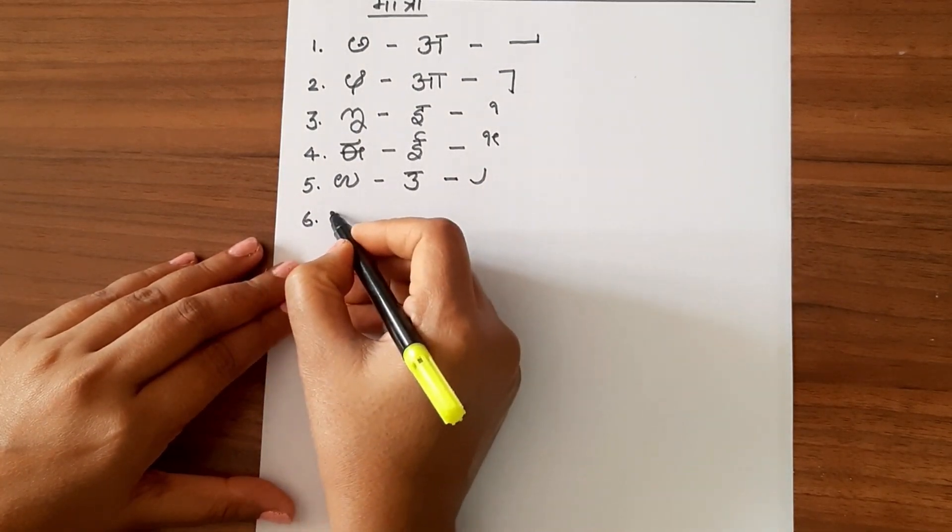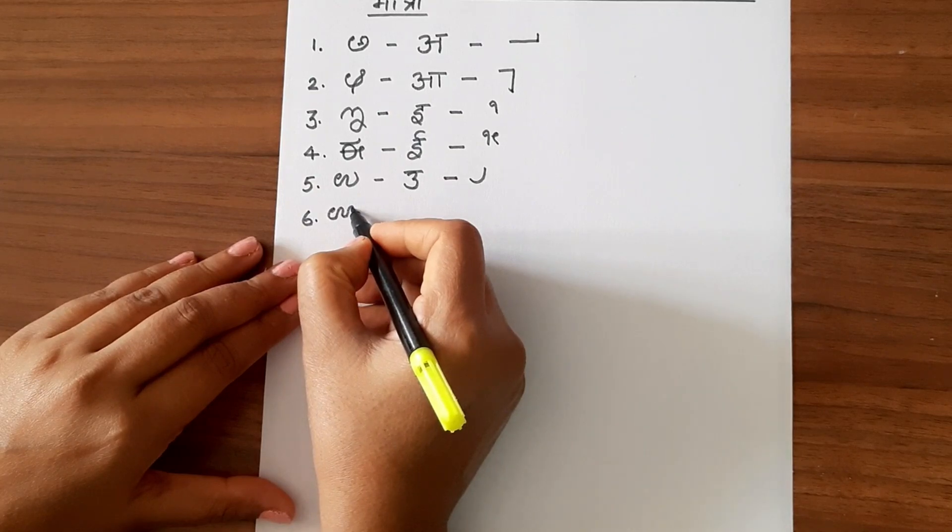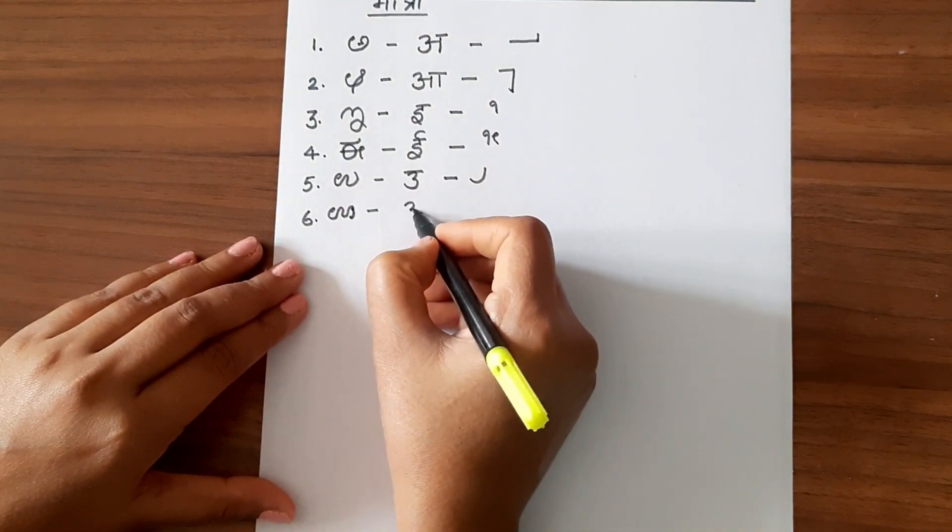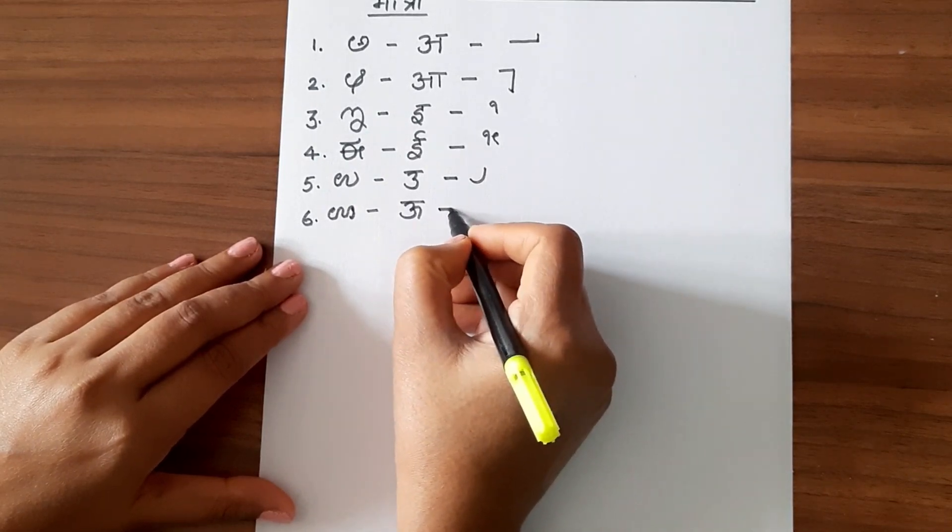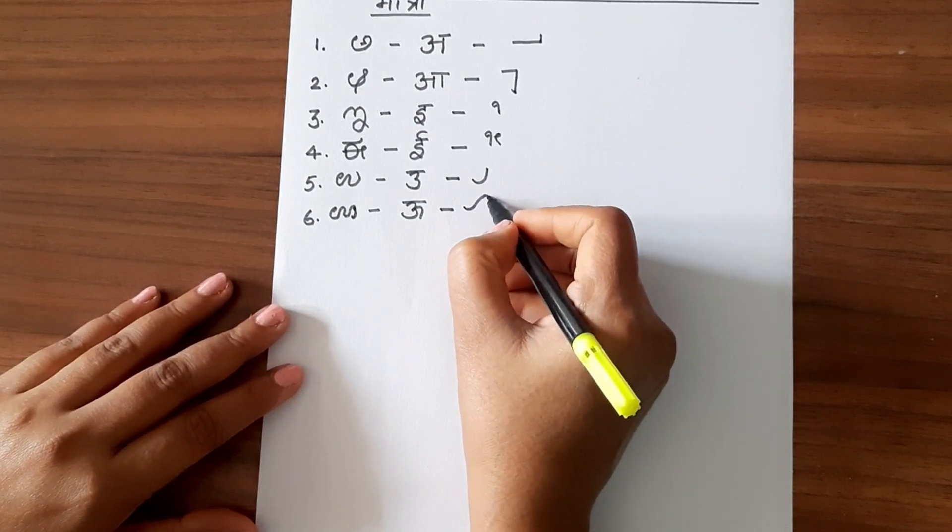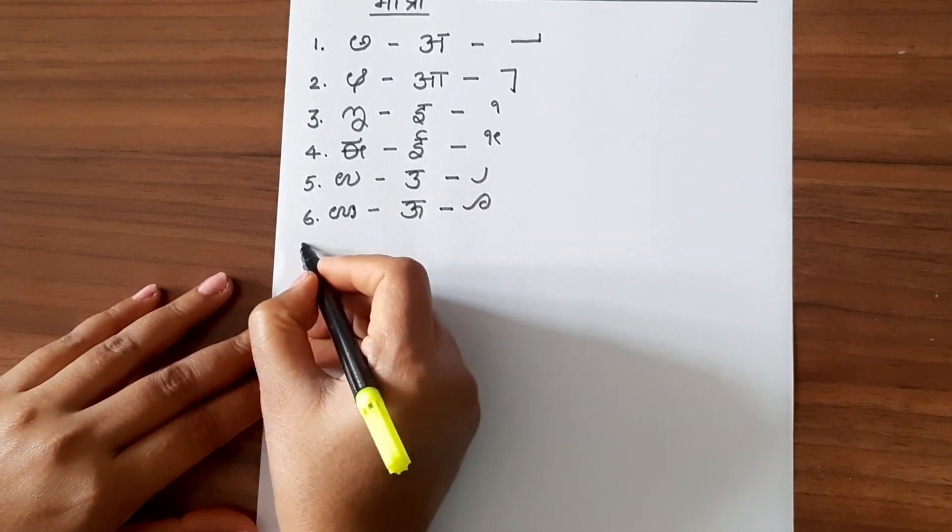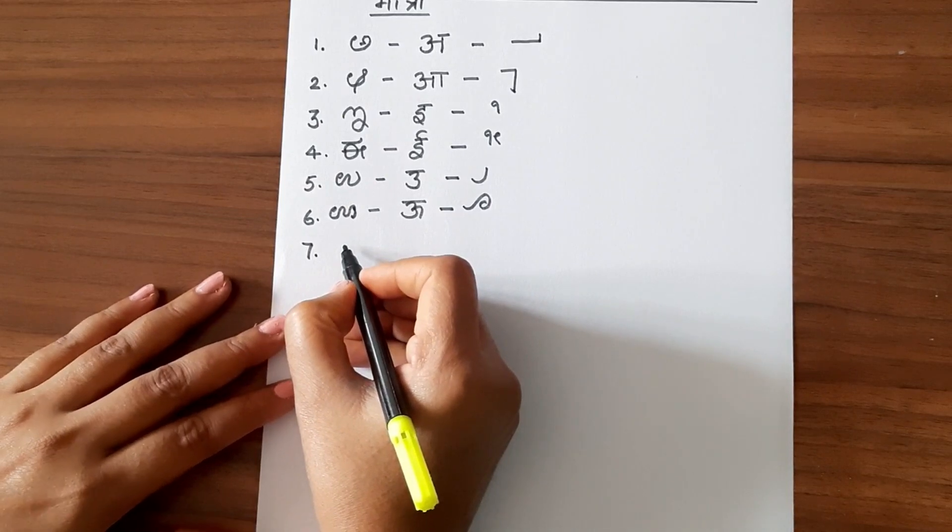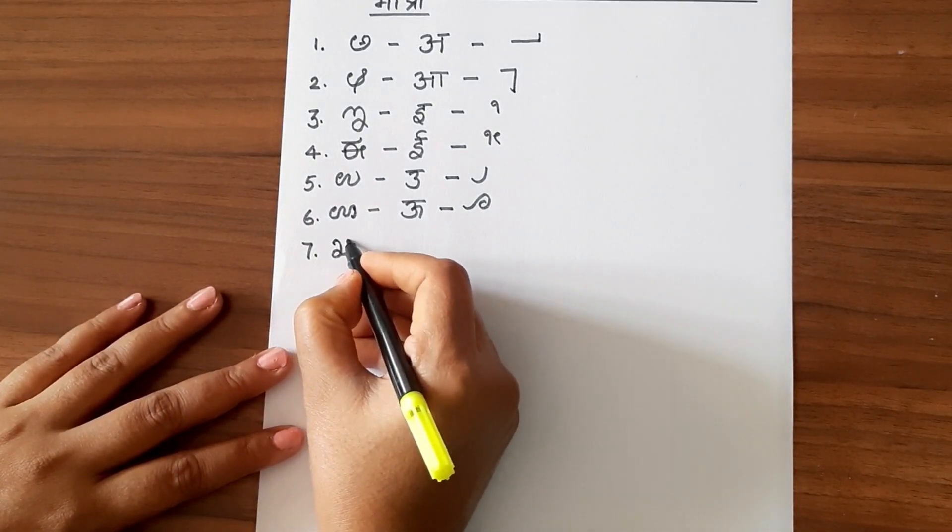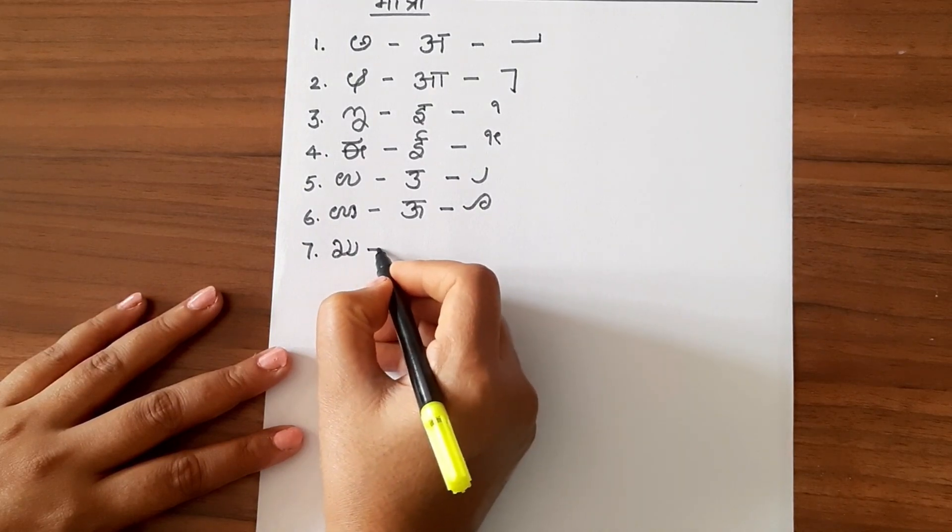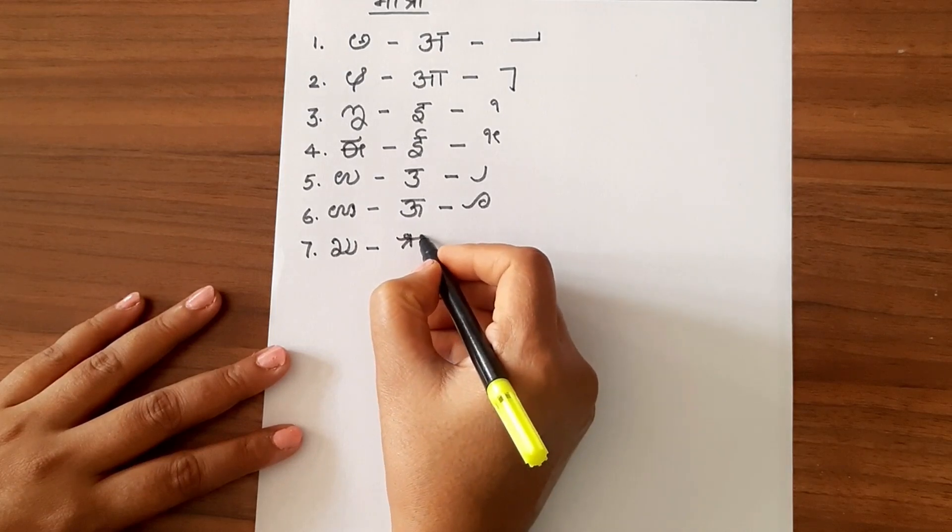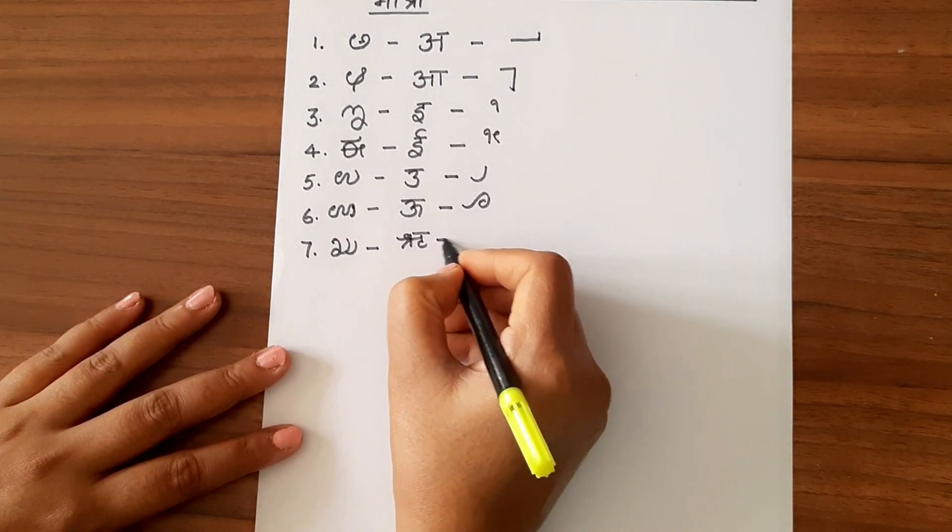Sixth one is and now matra here. And the matra is, and the matra of ru is.